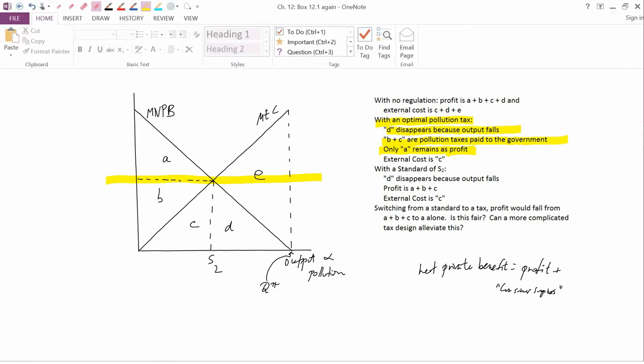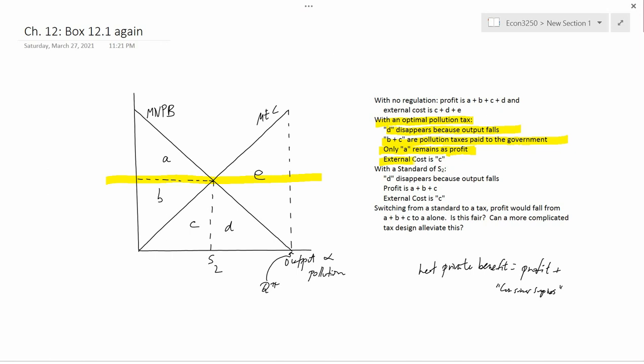External cost here is c, whereas before it was c plus d plus e. So external costs have shrunk a lot, and obviously that's the reason why the tax is imposed in the first place, in order to shrink external cost.